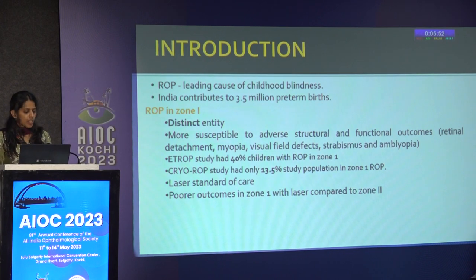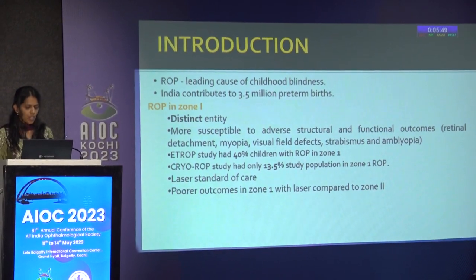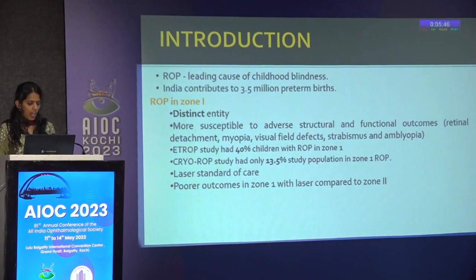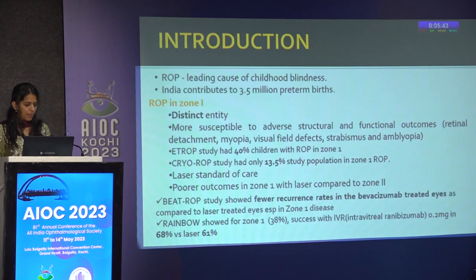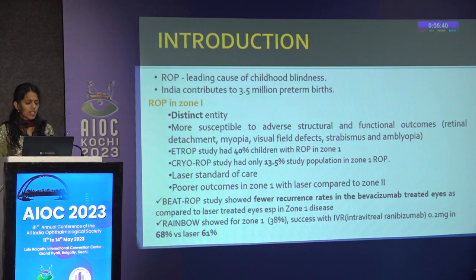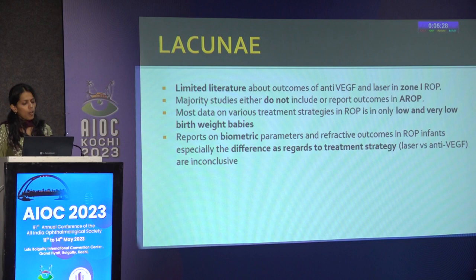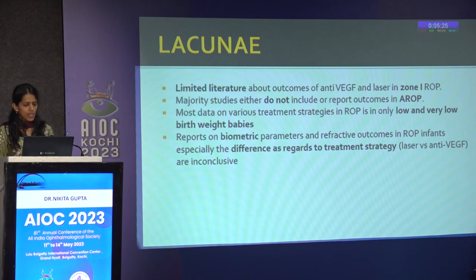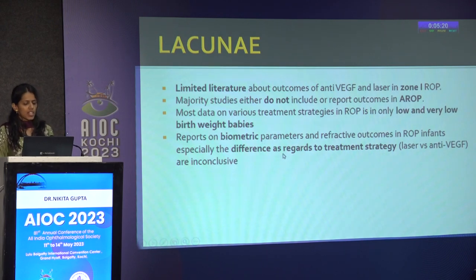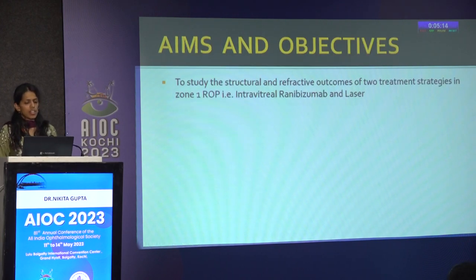There is limited literature about outcomes of treatment modalities in Zone 1 ROP, with most studies either not including or reporting outcomes in aggressive ROP, and not including babies with heavier birth weights. Reports on biometric parameters and refractive outcomes regarding differences in treatment strategy — laser versus anti-VEGF — are also inconclusive. The study examined structural and refractive outcomes of intravitreal ranibizumab and laser in Zone 1 ROP. All infants screened as per RBSK guidelines with treatment-requiring disease in Zone 1 were included, excluding those with congenital systemic or ocular abnormality, media problems, and previously treated ROP.